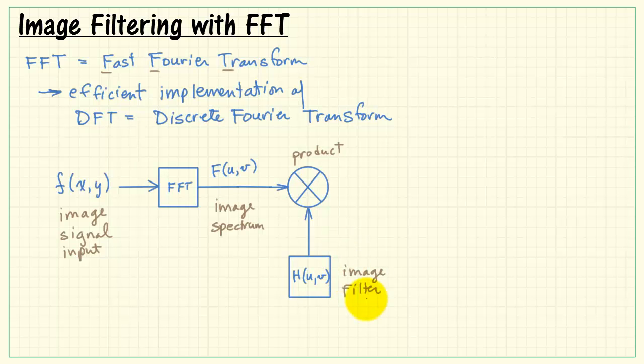We take this image spectrum and multiply it by a two-dimensional image filter. This is a function defined in the UV plane, and we simply take the product of the filter and the image spectrum. Let's call this g of uv.